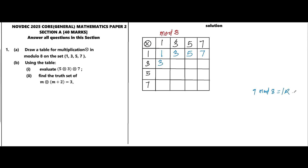9 in mod 8: 8 goes into 9 once, and the remainder is 1 — so 3×3 gives 1 in mod 8. Then 3×5=15; 15 in mod 8: 8 goes into 15 once with remainder 7, so the answer is 7. Then 3×7=21; 21 in mod 8: 8 goes into 21 twice, giving 16, and 21 minus 16 is 5.